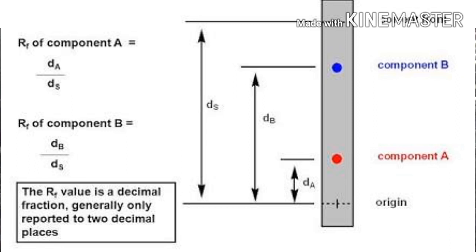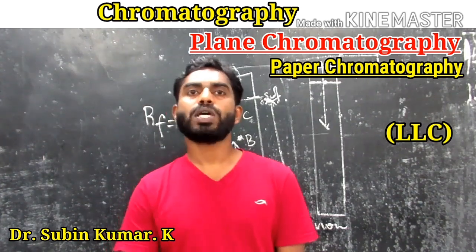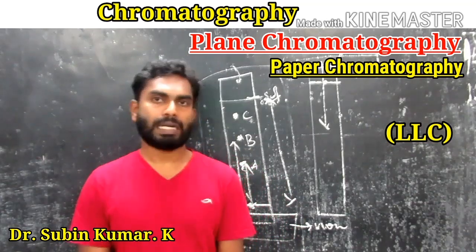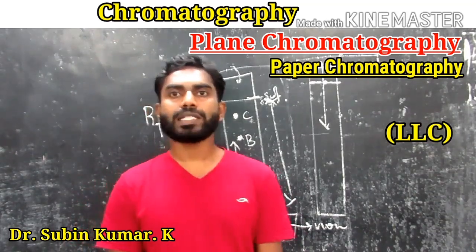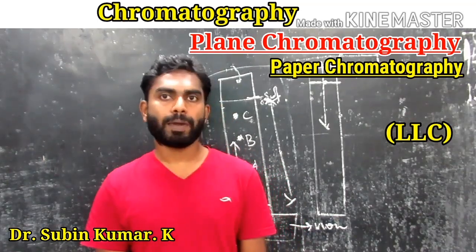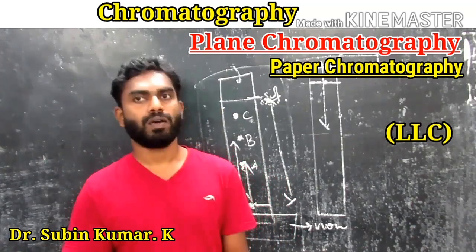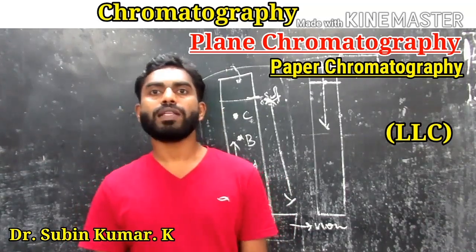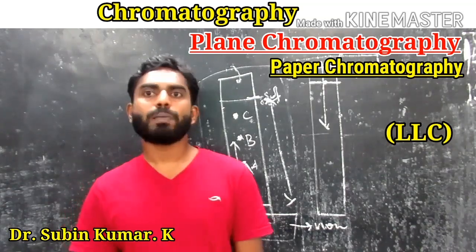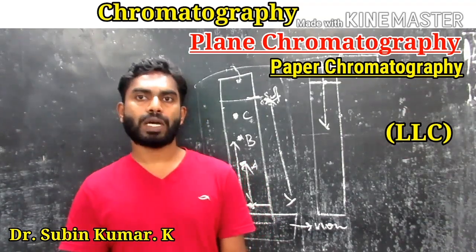Since the solvent moves faster than the compounds, the RF value will always be less than 1. Also note that the RF value has no unit. If the compound is colored, its position on the chromatographic paper may be easily located. However, if the substance is colorless, it may be treated with a reagent which imparts a characteristic color — this reagent is given the name 'developer.' Iodine is the most commonly used developer in paper chromatography.